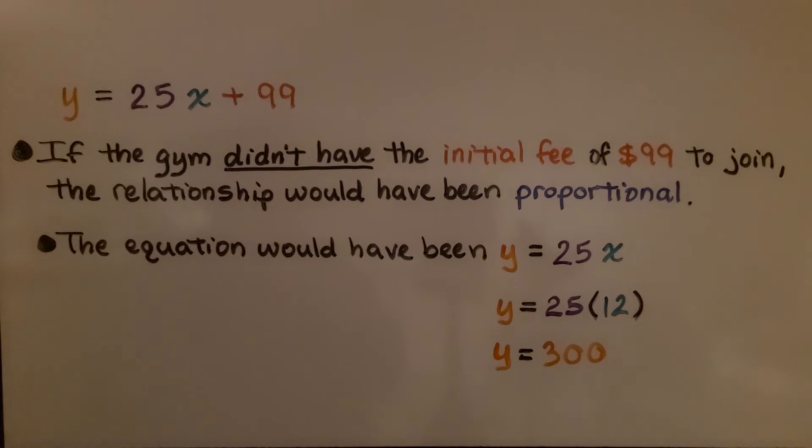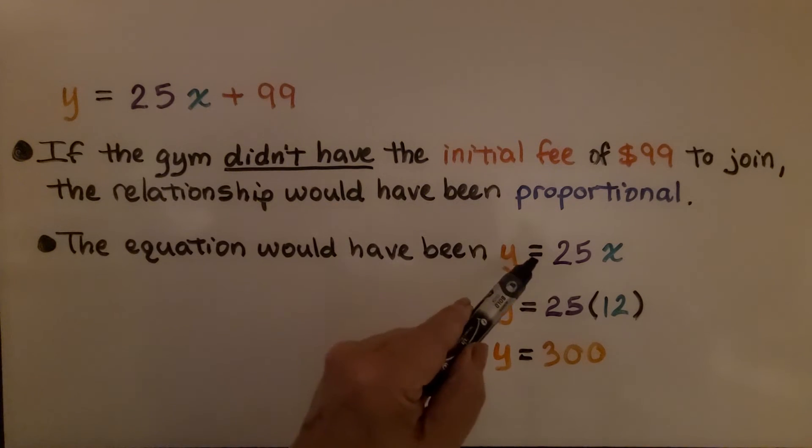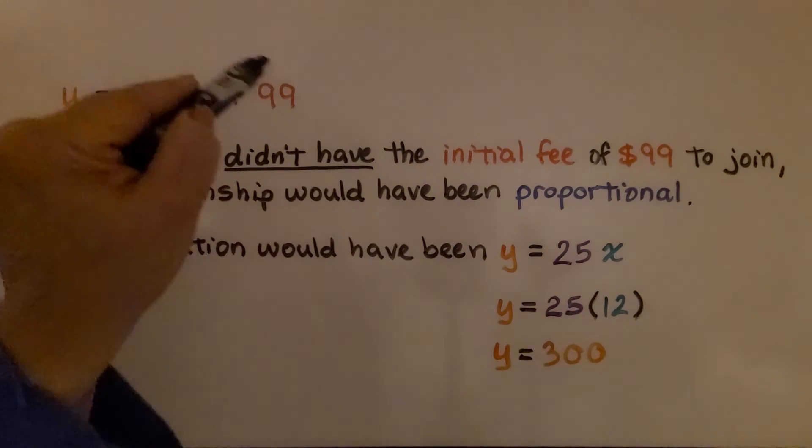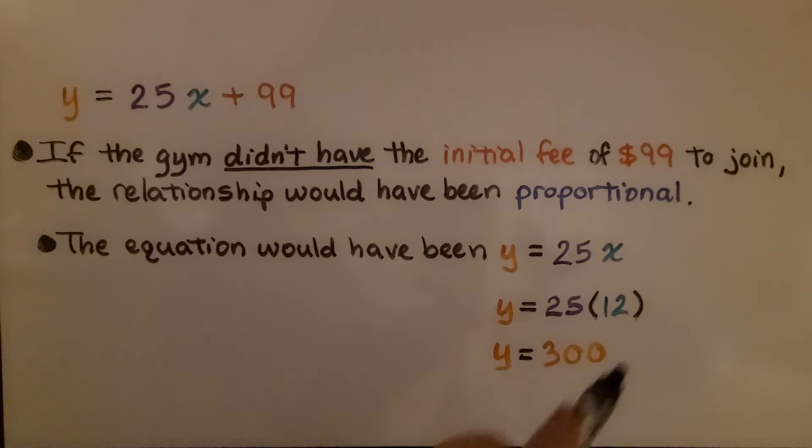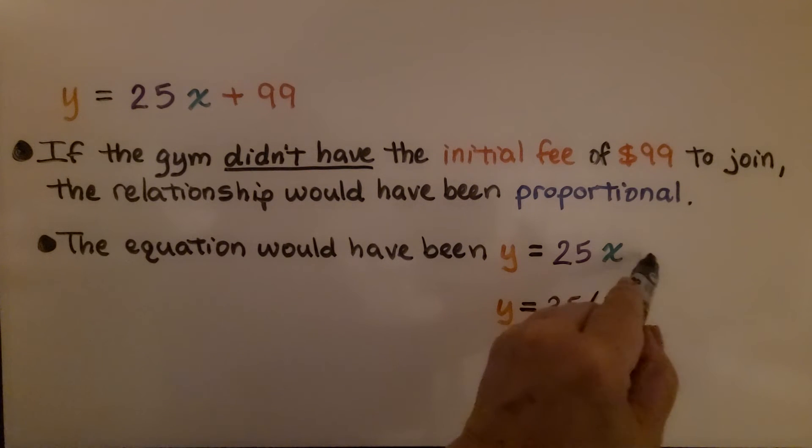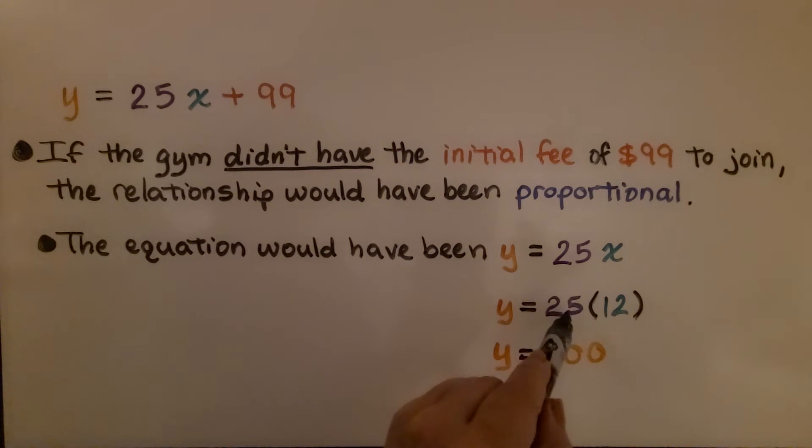If the gym didn't have the initial fee of $99 to join, the relationship would have been proportional. The equation would have been y = 25x. We wouldn't have had that 99 there. The plus b for the y-intercept b would have been zero. We would have multiplied 25 times 12, and the fee for one year would have been $300.